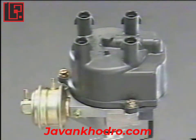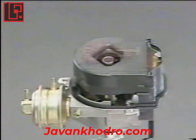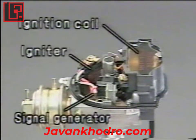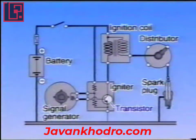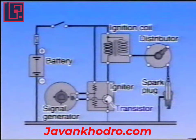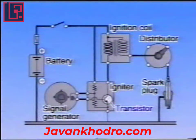Now let's take a close look at how a high voltage is generated using an actual transistorized ignition system. An ignition coil, a signal generator, and an igniter are integrated with the distributor. In the transistorized ignition system, the ignition signal from the signal generator is transmitted to the transistor in the igniter. This transistor turns the primary current in the ignition coil on and off.